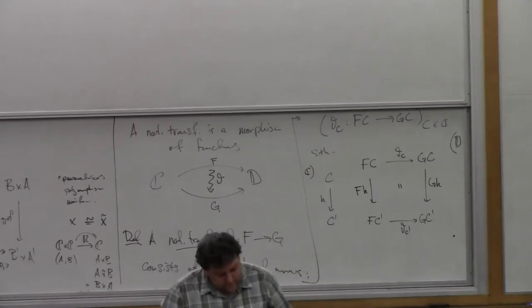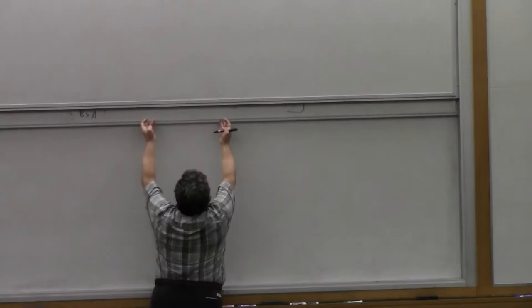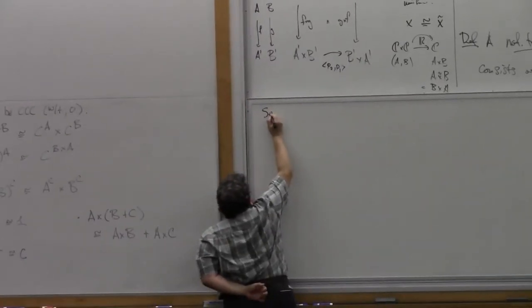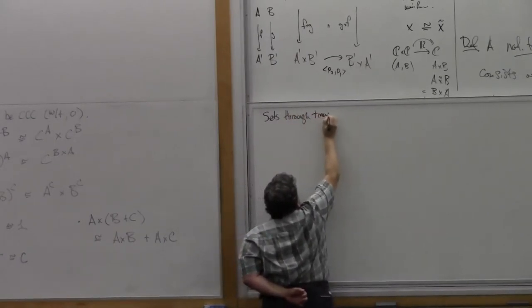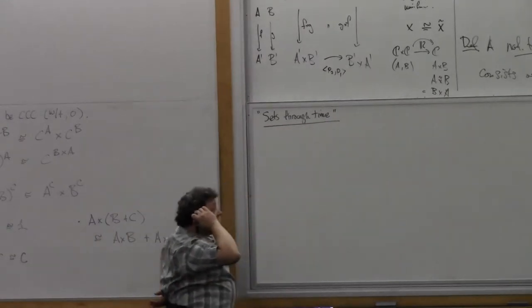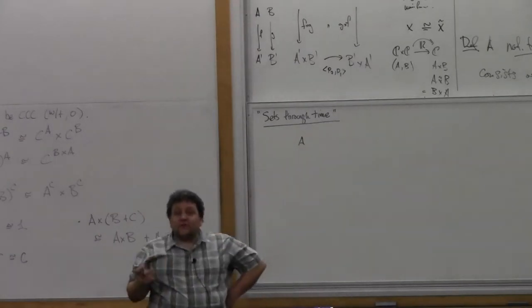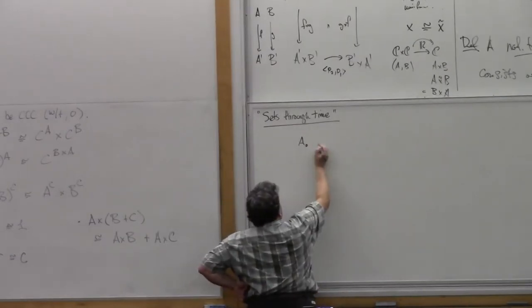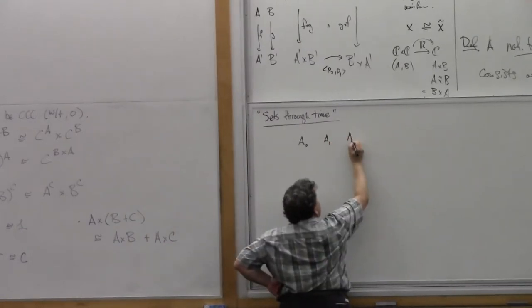Let me give you an example: sets changing through time. A set through time is the following thing. There are discrete moments of time — 0, 1, 2, 3, 4, and so on. There's a set A0 at time 0, and a moment later at 1 there's another set A1, and so on. And you want to know how the elements of the set change as you go through time.